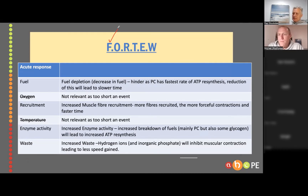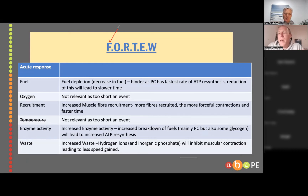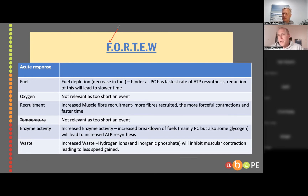Increased motor unit recruitment — absolutely. We'd have increased muscle fiber force and also an increased firing rate, both of which would lead Kate Campbell to swim faster. Temperature? She's in a pool, and the event is too short, so it's not a big deal. Enzyme activity — absolutely. You'd have to link an increase in enzyme activity to an increased rate of ATP resynthesis.